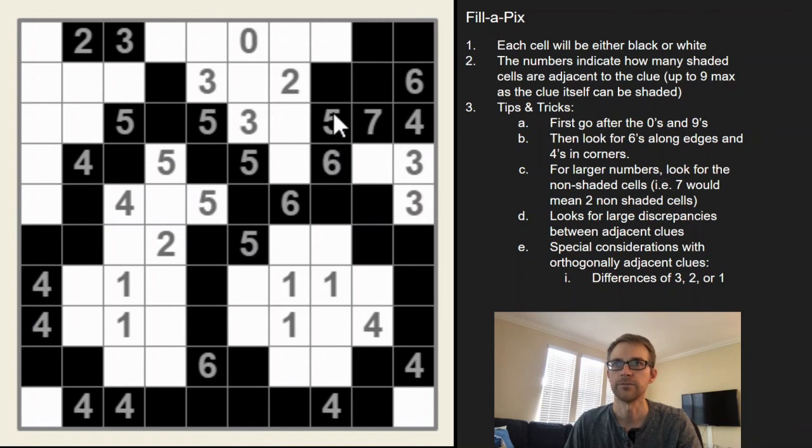And here's a difference of one, so on one side you have to have one more shaded cell. So here we have three, so on the other side you have to have two out of the three. So hopefully that makes sense.